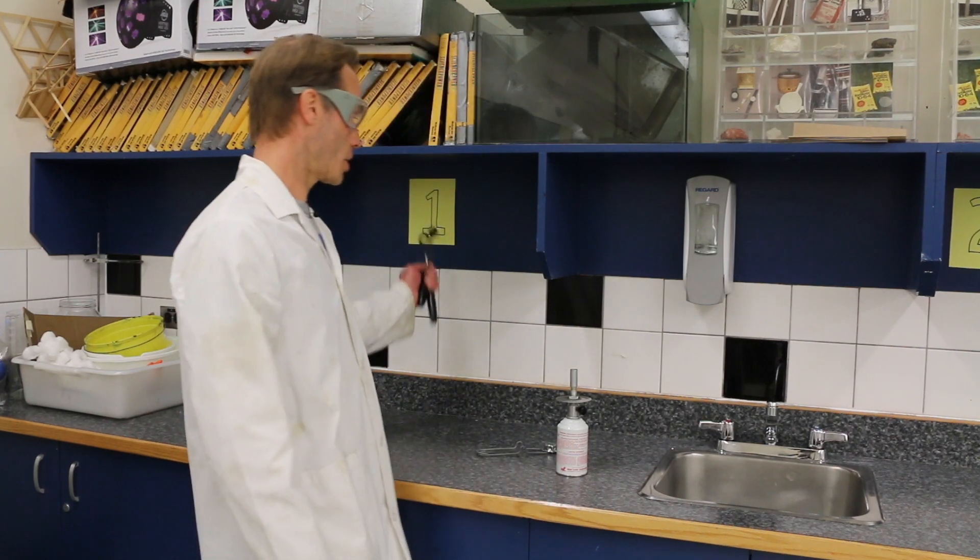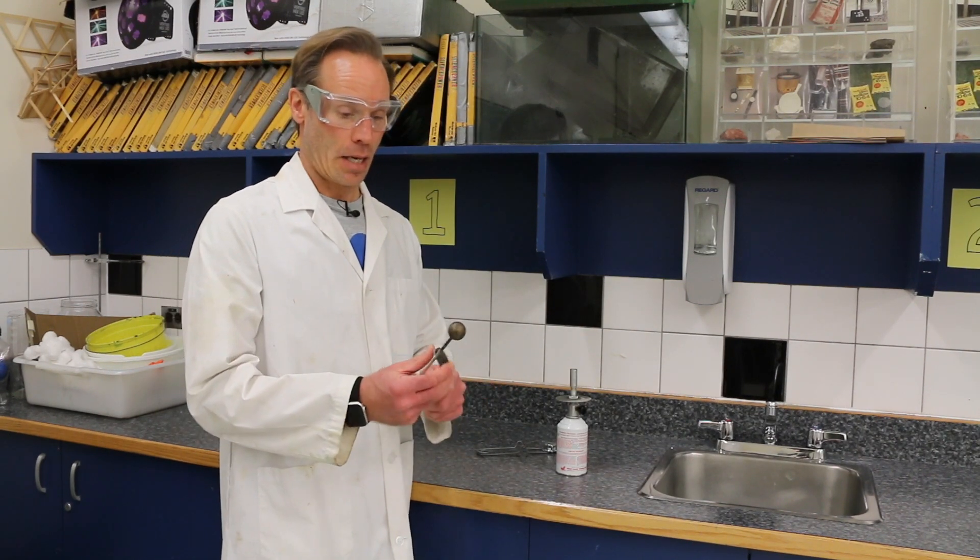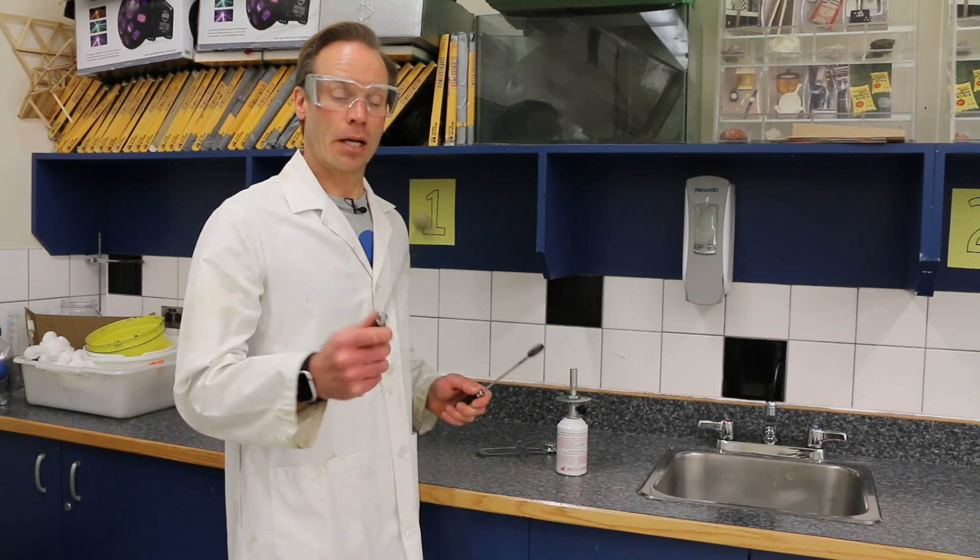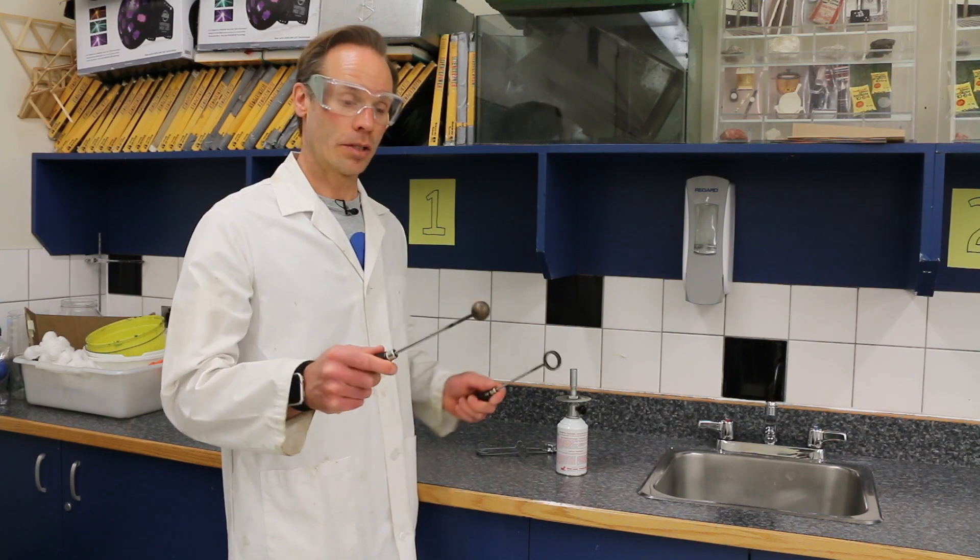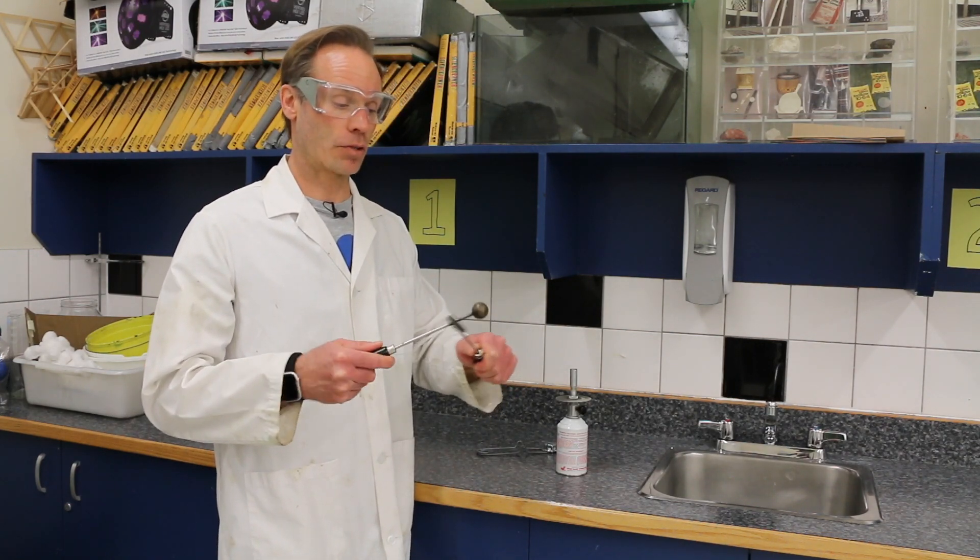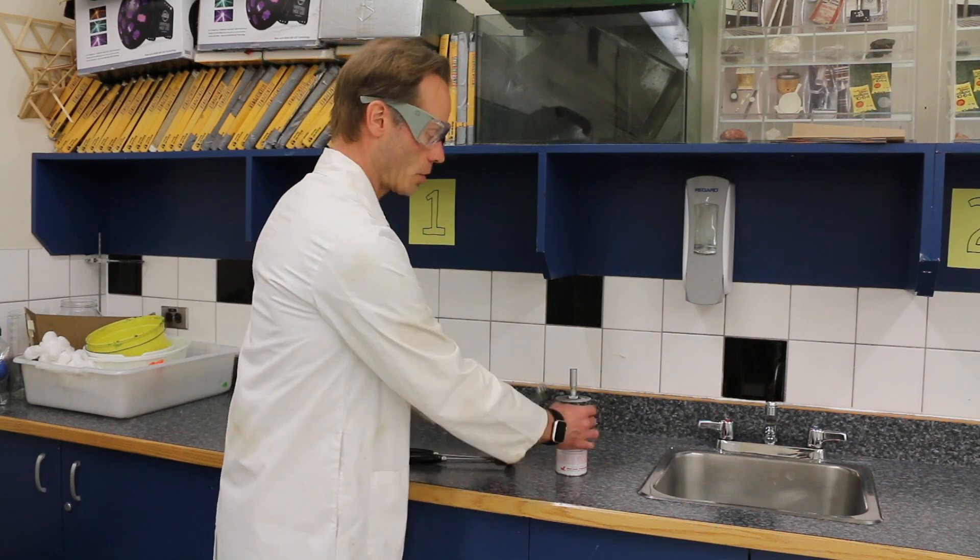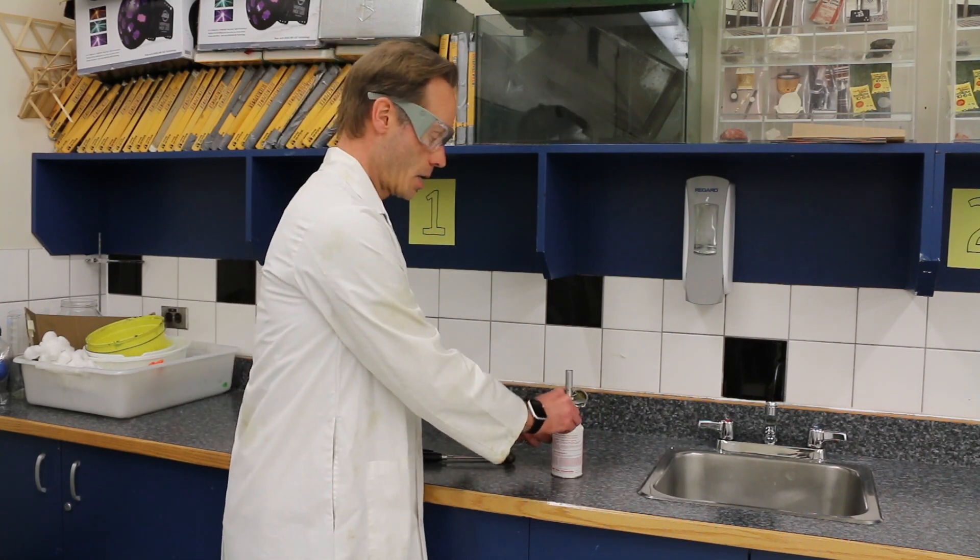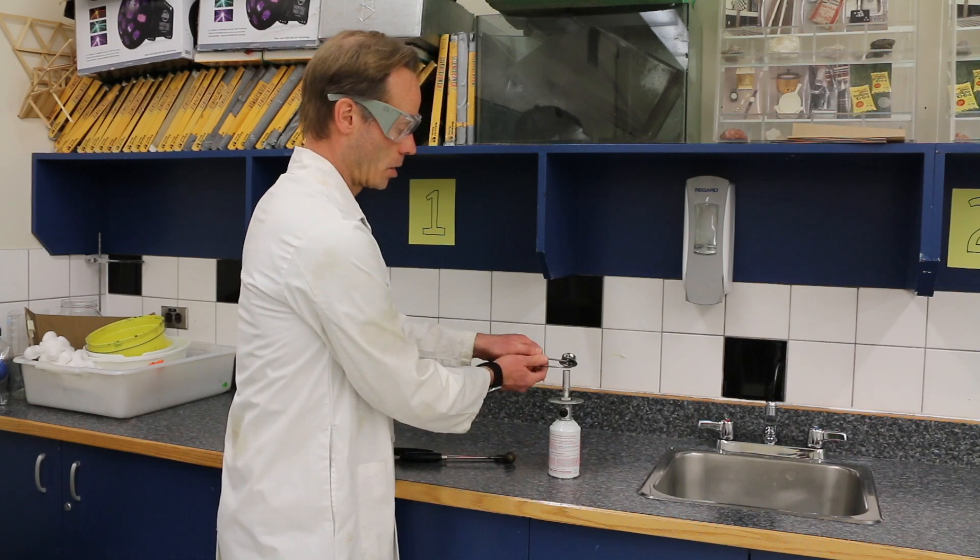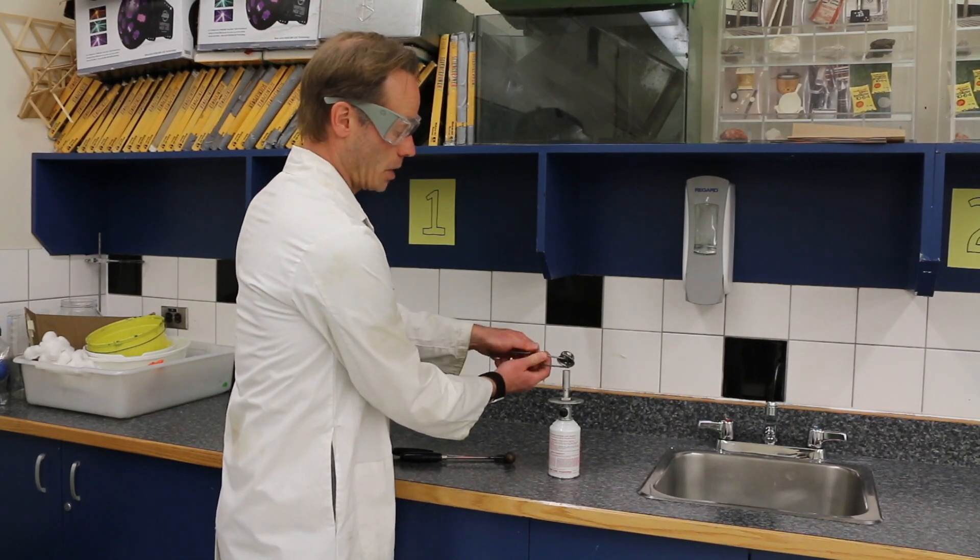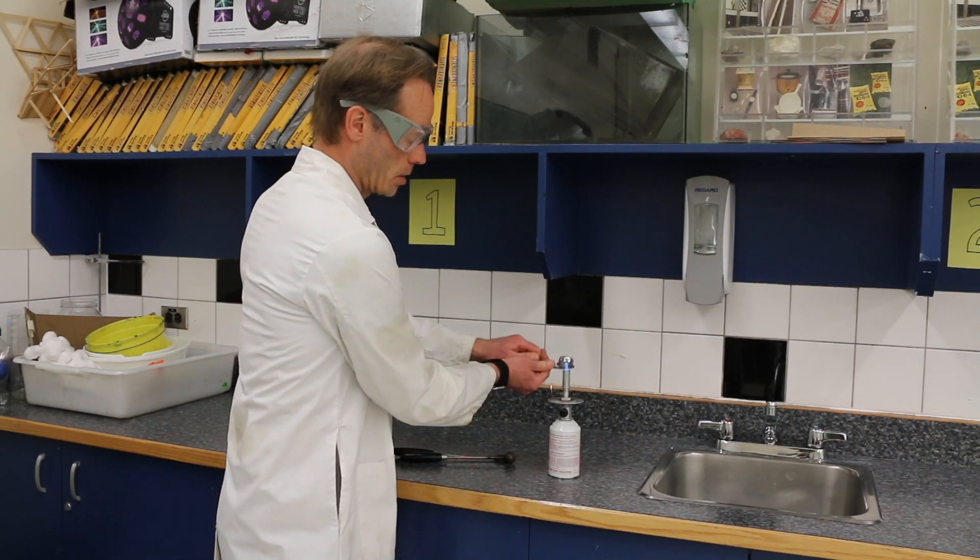At our first station, here's station number one, we've got our ball and our ring and when the ball is cold we can put it through the ring. It fits right through. See that? Now we're going to heat it up and we're going to see what happens. So I've got a butane burner here and we'll see what happens when I light this butane burner. There we go.